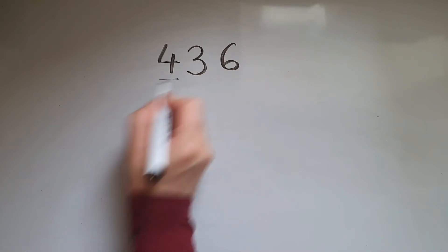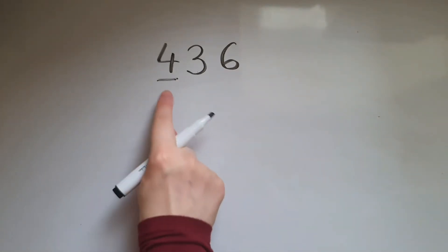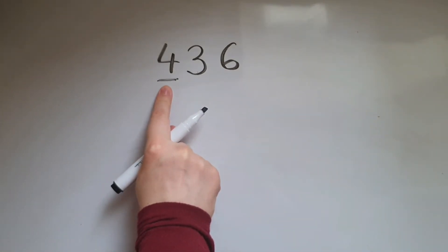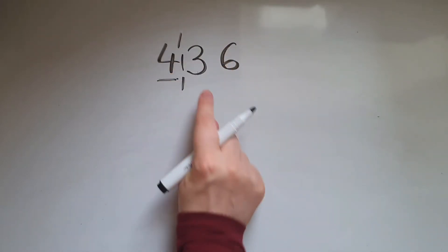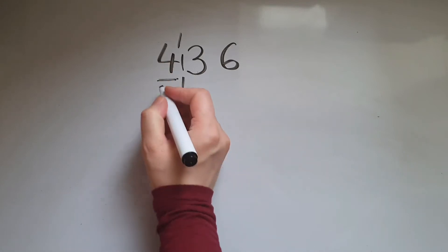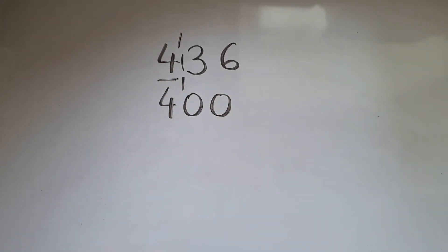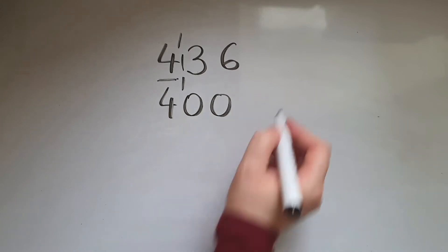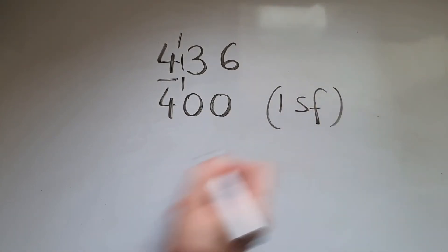So if I were to round this number to one significant figure, that is going to be rounding it to the nearest hundred. So looking at the digit on its right, we're going to decide that we're going to round down, so that would be 400 as the answer. This is one significant figure.